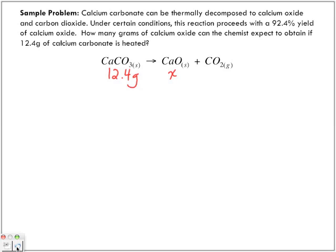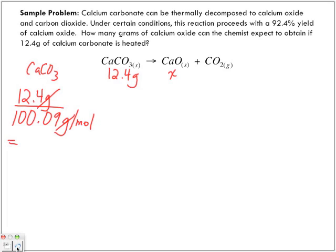What are we always trying to find? Moles, right? We can find molar mass, which will help us find the number of moles. So we have 12.4 grams of calcium carbonate. We're going to divide it by the molar mass of calcium carbonate, which is 100.09 grams per mole. So grams cancel out, and I will have 0.1239 moles of calcium carbonate.